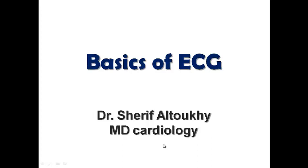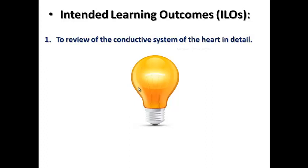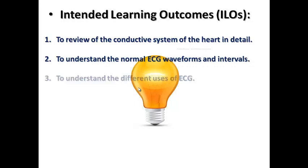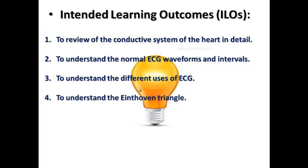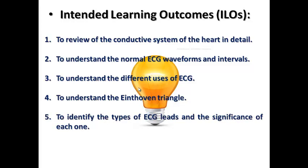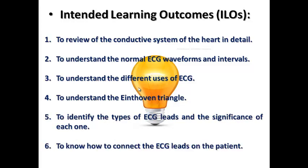The intended learning outcomes for this lecture: we will review the conductive system of the heart in detail, understand normal ECG waveforms and intervals, understand the different uses of ECG, understand the Einthoven triangle which is important for understanding the axis, identify the types of ECG leads and their significance, and learn how to connect ECG leads on the patient — because as a doctor you need to know correct lead attachment in order to correct any malposition.